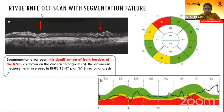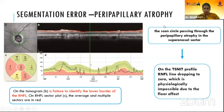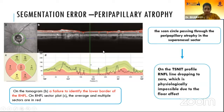This is an RTVue scan showing segmentation error due to misidentification of both borders of the RNFL, causing an abnormal RNFL graph and abnormal RNFL profile. This is a segmentation error due to peripapillary atrophy, where the scan circle is passing through the peripapillary atrophy in the superior nasal sector, causing failure to identify the lower boundary of the RNFL.